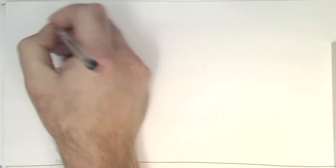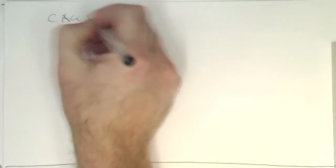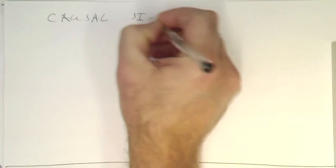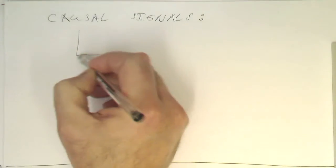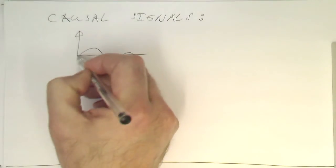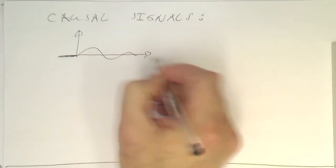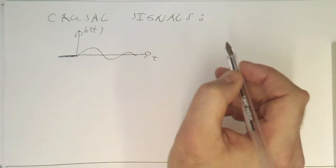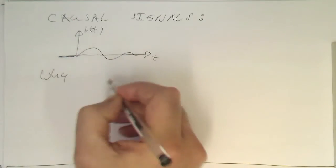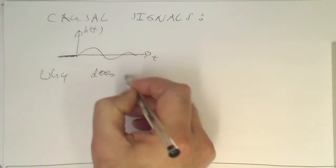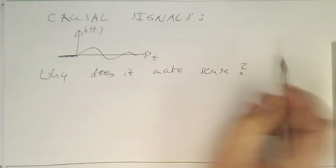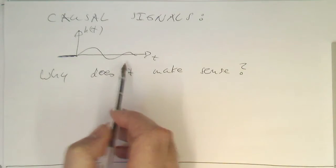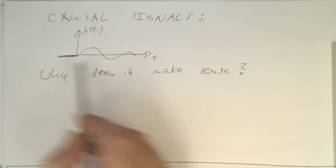So the question is: why does it make sense to define our causal signals like this? To write it down again: our causal signals evolve like that and are always zero in this direction — for negative t. So h of t. Why does it make sense to define causal signals this way? The reason is if we look at the convolution operation.